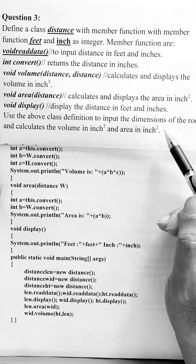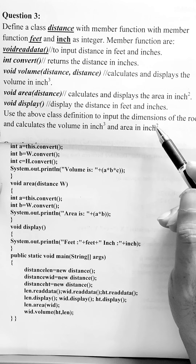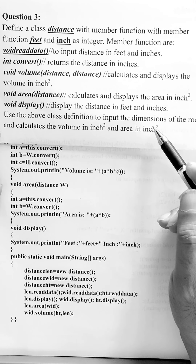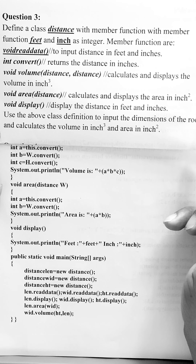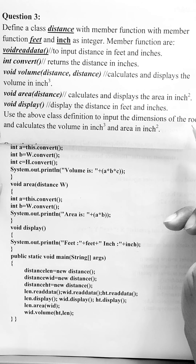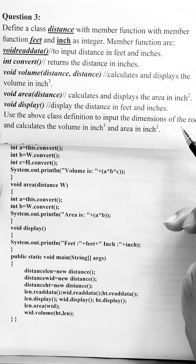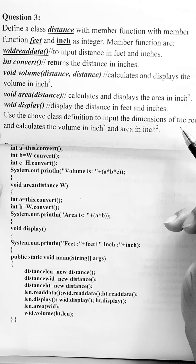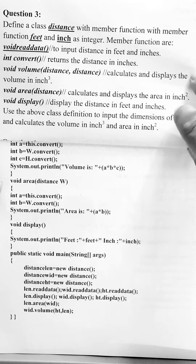So the problem is that we have to create a class with two data members — feet and inches. Finally, we have to take three measurements. Suppose if we take a room, three dimensions are given: length, width, and height. We have to create three objects in this class for length, width, and height, then convert these feet and inches into inches only, and finally calculate the volume and area with the help of these measurements.